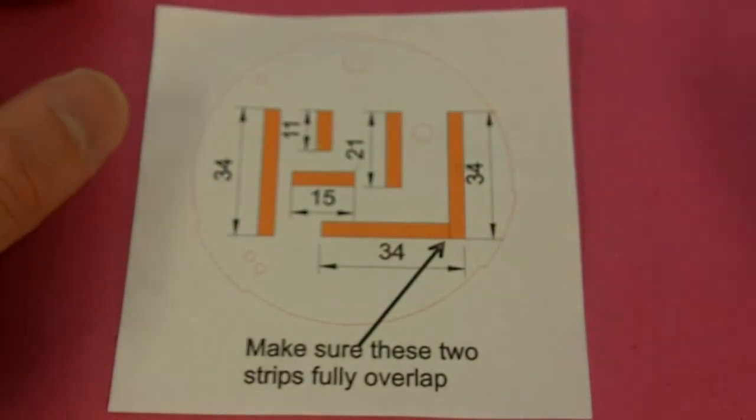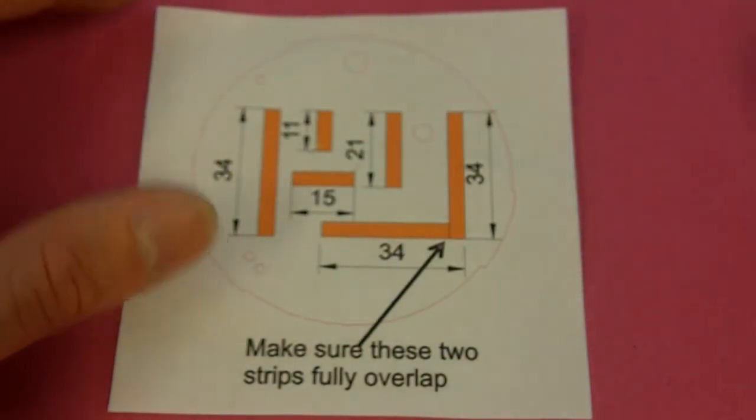Right, the first stage of making your nightlight is to make the circuit on the base.